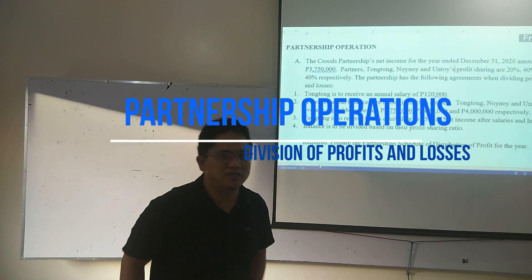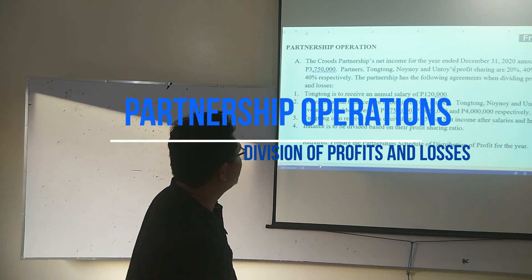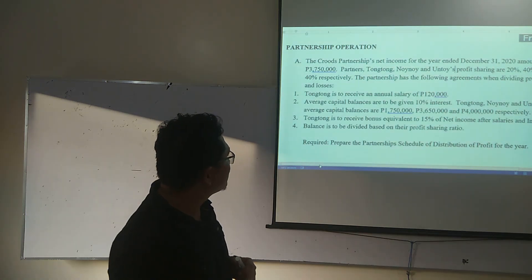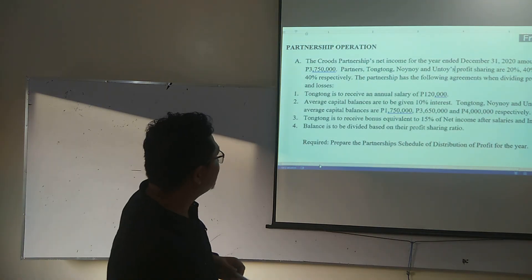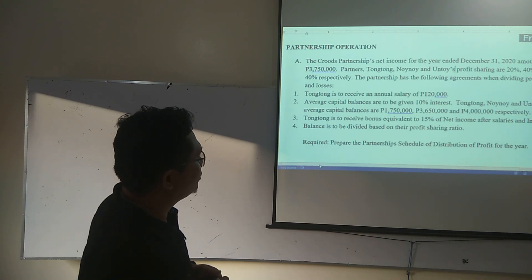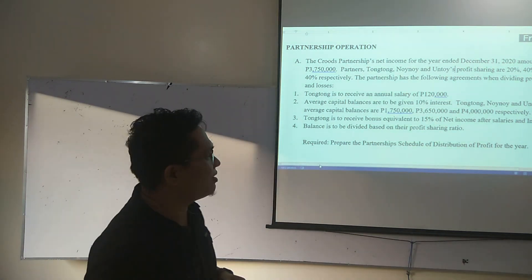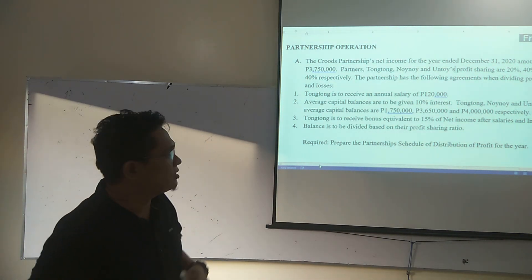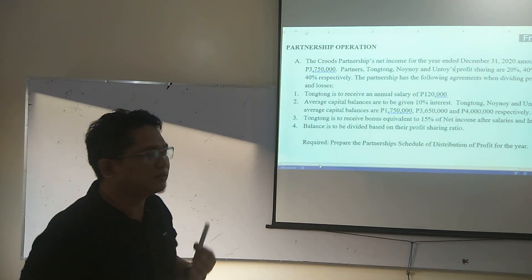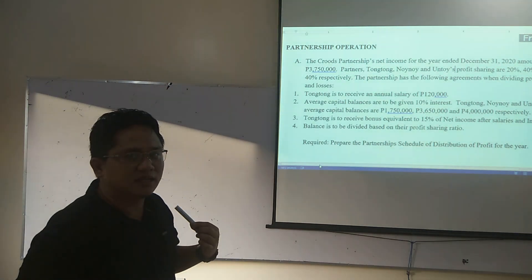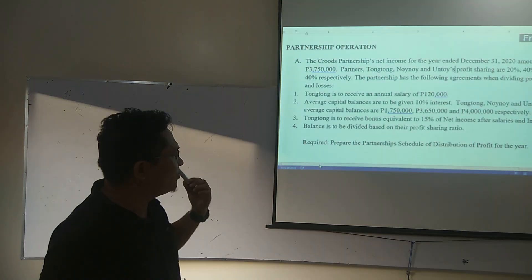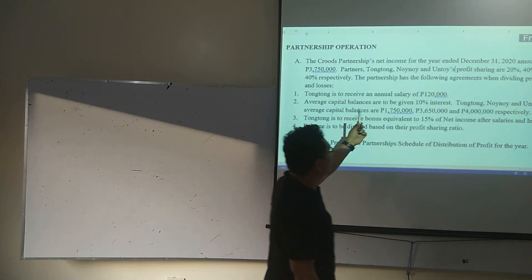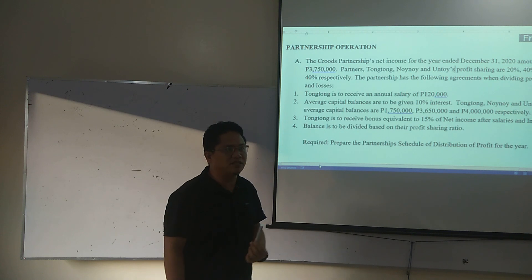We are accounting for partnership operations — both distribution of income or losses to partners. Partners Tongtong, Winoy, and Puntoy share profits 20-40-40 under the Fruits Partnership. The result of operations for the period is 3,750,000. Our requirement is how are we going to divide this profit for the year? The partnership has the following agreements when dividing their profits and losses.